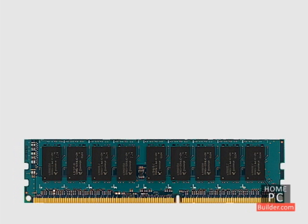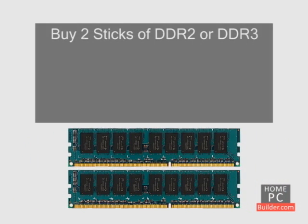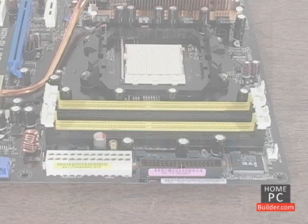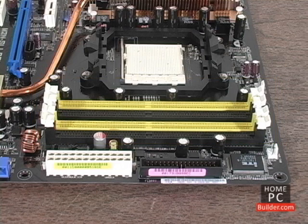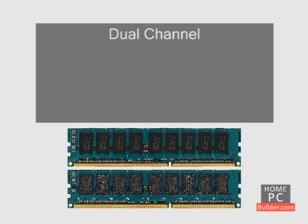When you buy RAM for your new computer, we recommend getting two sticks of DDR2 or DDR3 memory, at least one gigabyte in size with the same specifications, for a total of two gigabytes. Since most motherboards have four available slots to add memory, you'll have two more slots available for adding memory in the future should you need to.